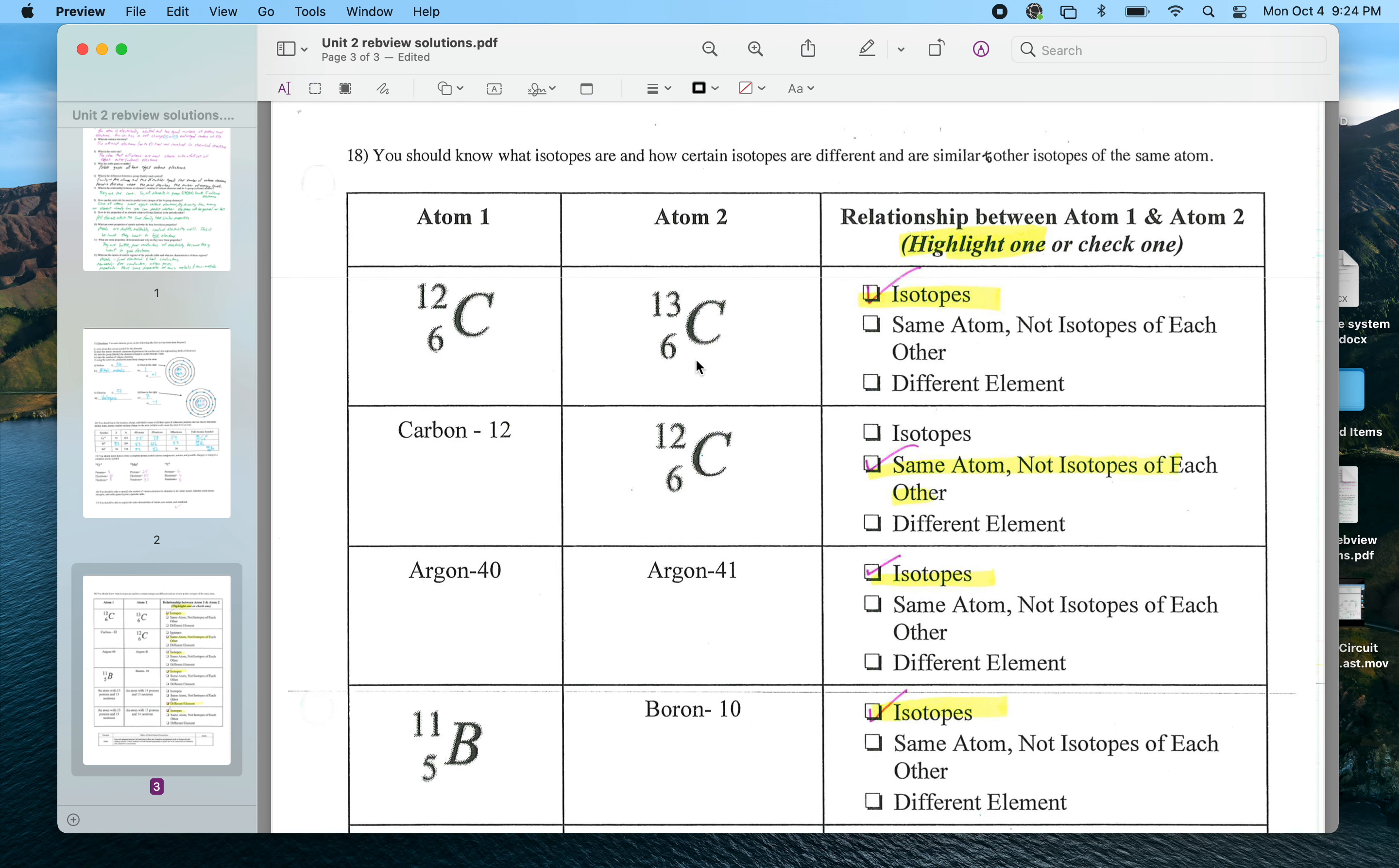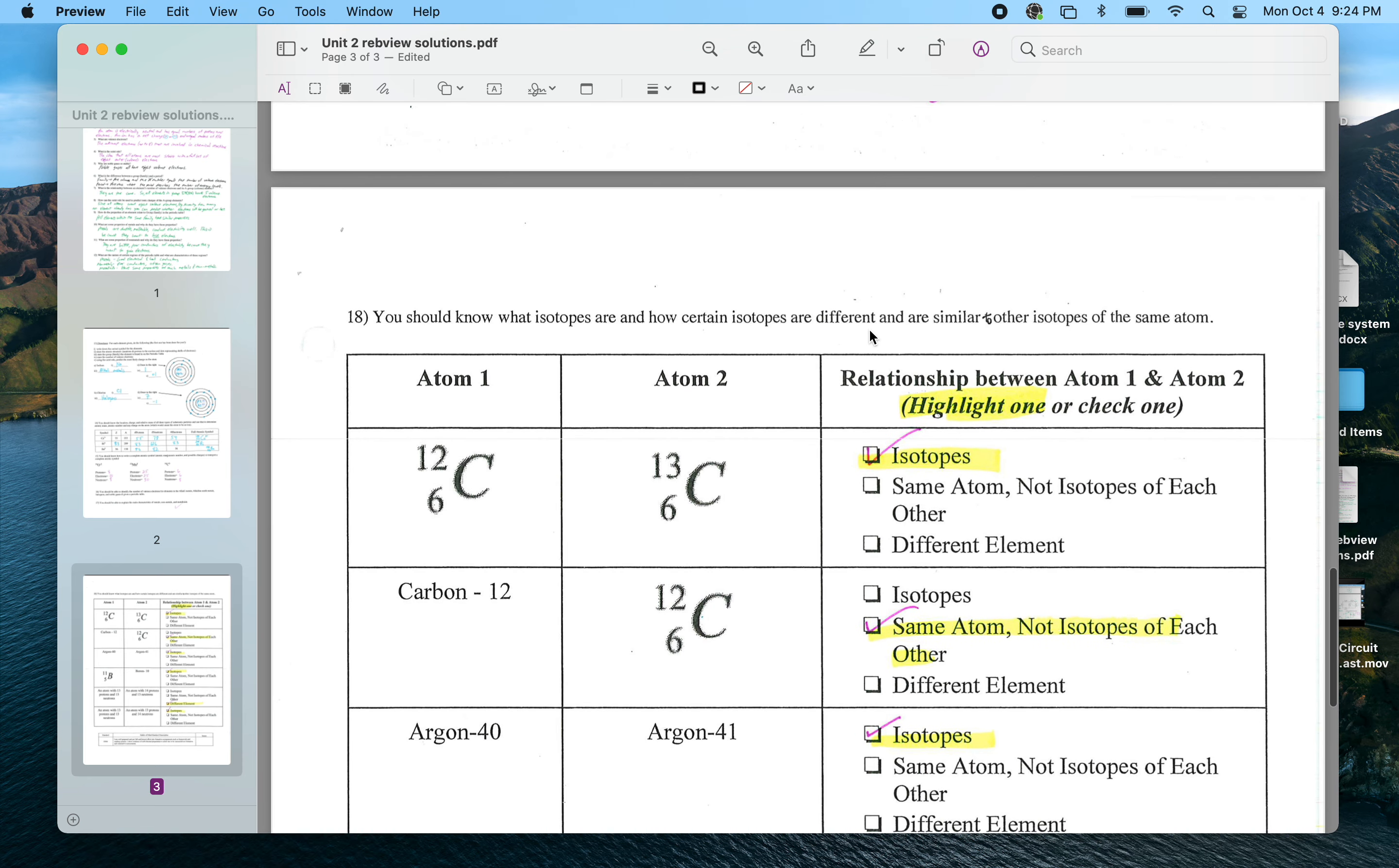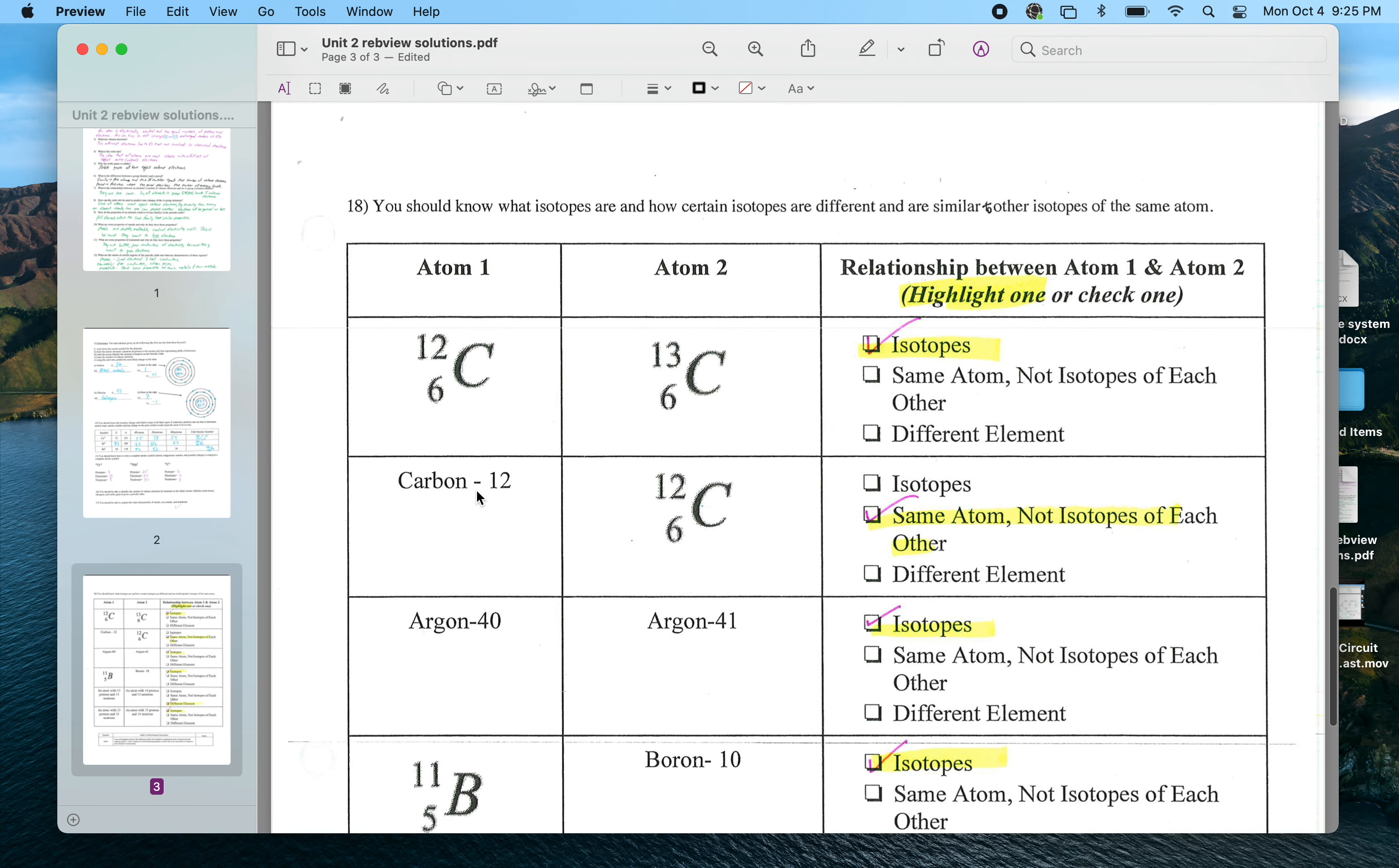That should do that page. The next page here - really important that you know the difference between isotopes and different elements. So here, since this is the atomic number, these are both carbon. You can tell that because they both have the letter C, but they have different masses. That is the definition of what an isotope is. Carbon-12 here is written the same; this is also carbon-12. That's a shorthand version of that, so it's the same atom and they're not isotopes of each other. Both these carbon atoms would have six protons and six neutrons.